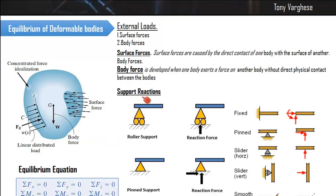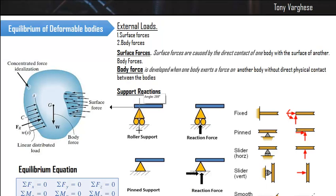Now we have to discuss about surface reactions — how surface reactions develop in a material. If you consider a roller support, this particular roller is free to move in the x direction, but the motion is arrested in the y direction. Whenever motion is arrested in some particular direction, a reaction will develop in that direction. So here the y direction is arrested, and we have a reaction in the y direction.